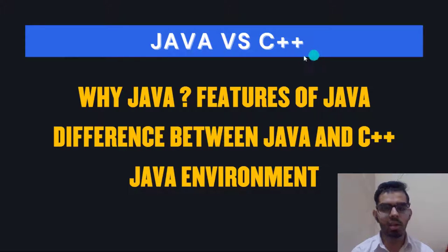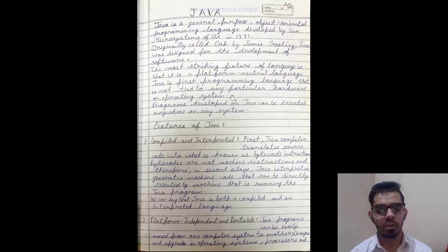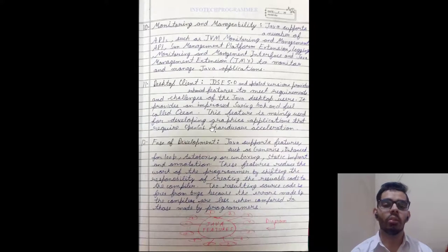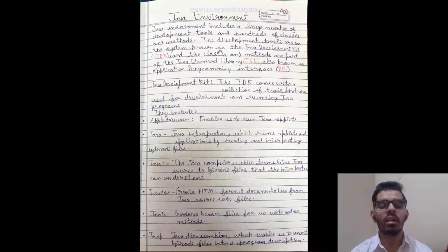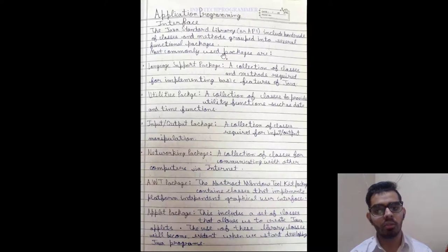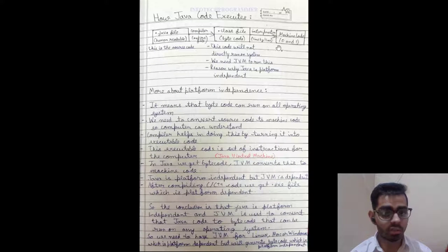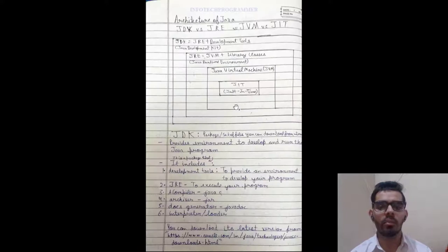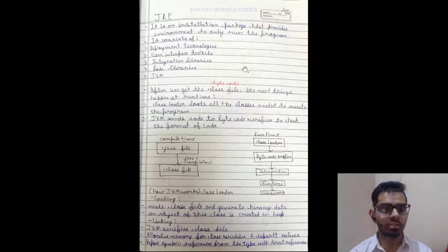After basics, we start with Java. First we'll see Java vs C++, what are the features of Java, the difference between Java and C++, and the Java environment. In my notes I've explained what is Java, features of Java, difference between Java and C++, the environment of Java, application programming, updates in Java, runtime environment, how code executes in Java, the architecture of Java, and the Java runtime environment.